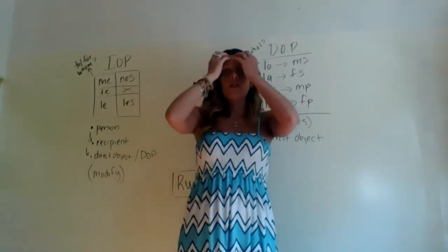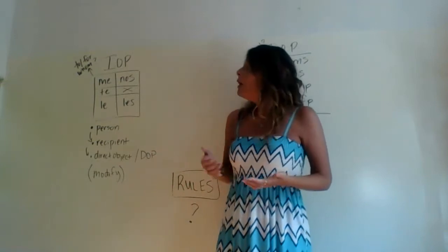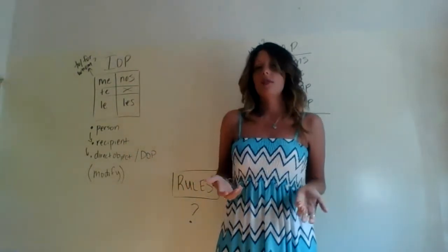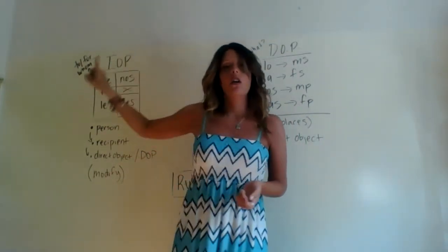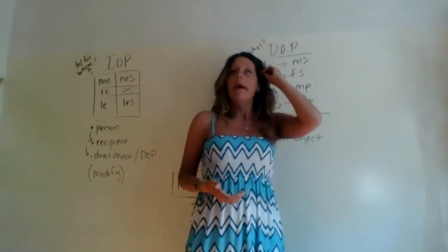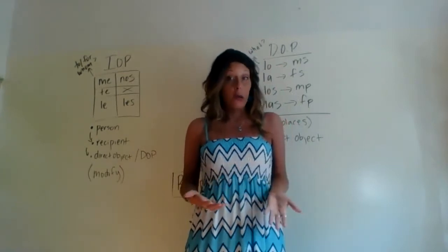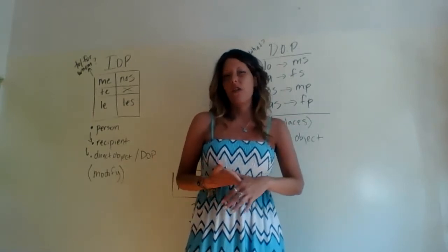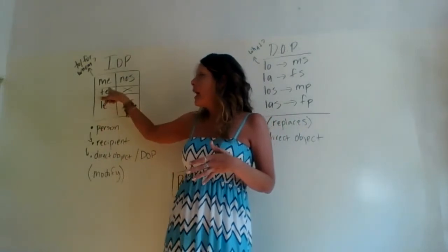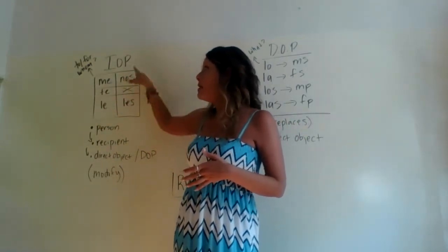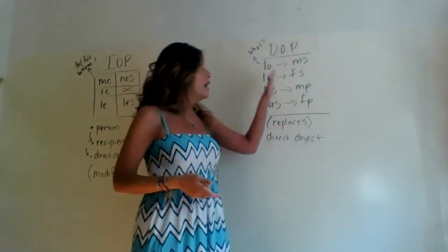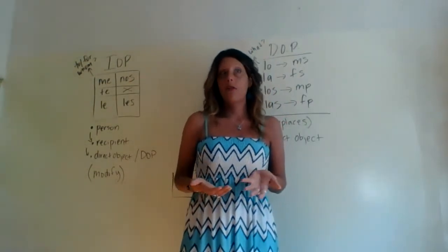One disclaimer: because this is just a review of IOPs and DOPs, you will sometimes see 'me,' 'te,' and 'nos' used also as DOPs. That is not the most common thing to happen in Spanish, but it can happen. For the purposes of this review, I'm going to think of 'me,' 'te,' 'le,' 'nos,' and 'les' all as indirect object pronouns. But please do know that if you remember from the past that 'me,' 'te,' and 'nos' can also serve as direct object pronouns, you're not wrong — it's just not very frequent.